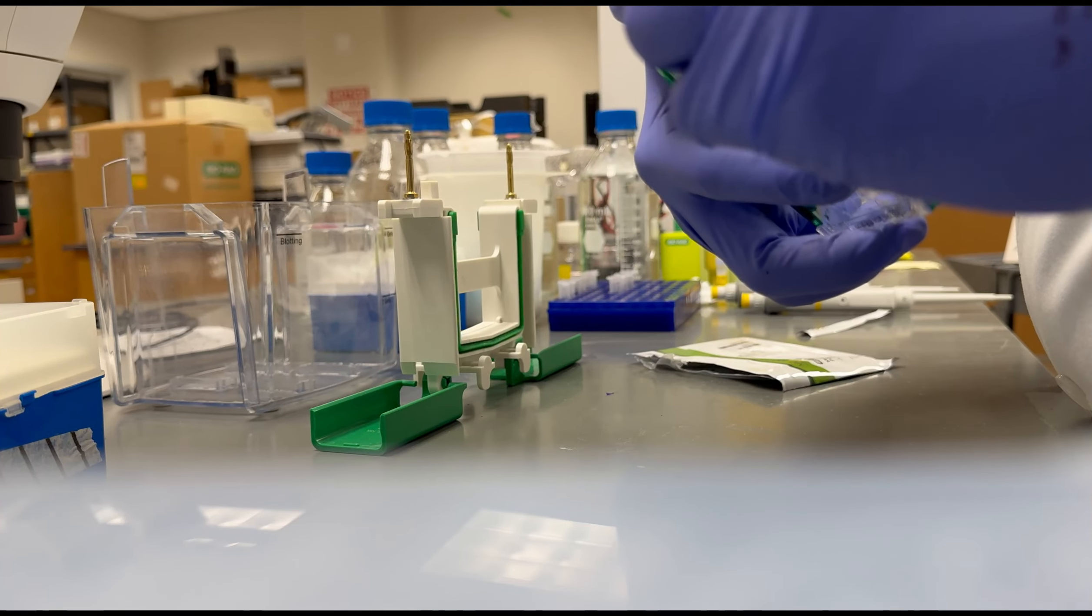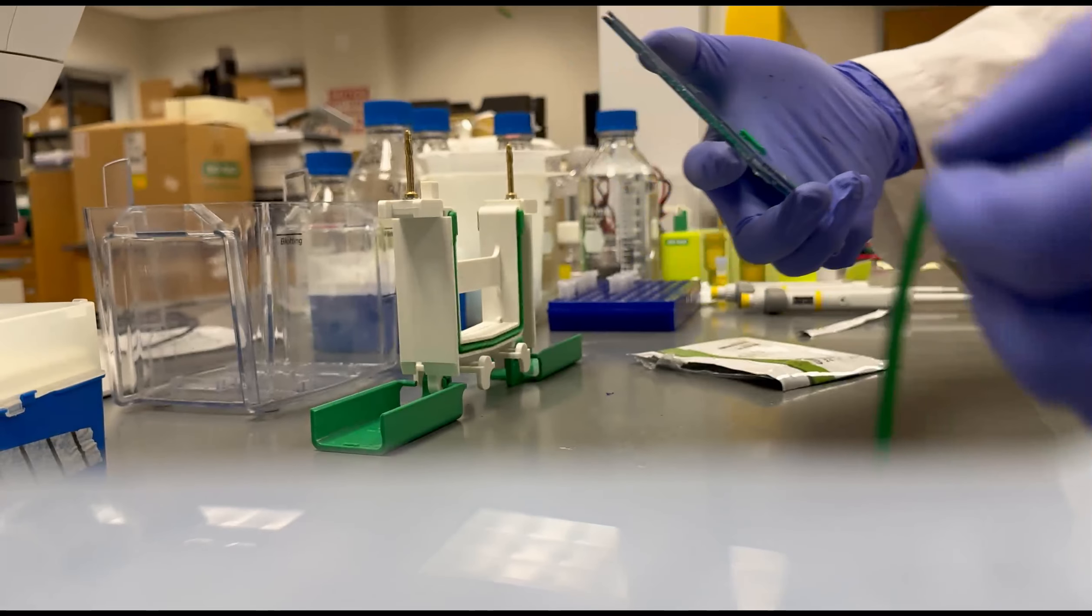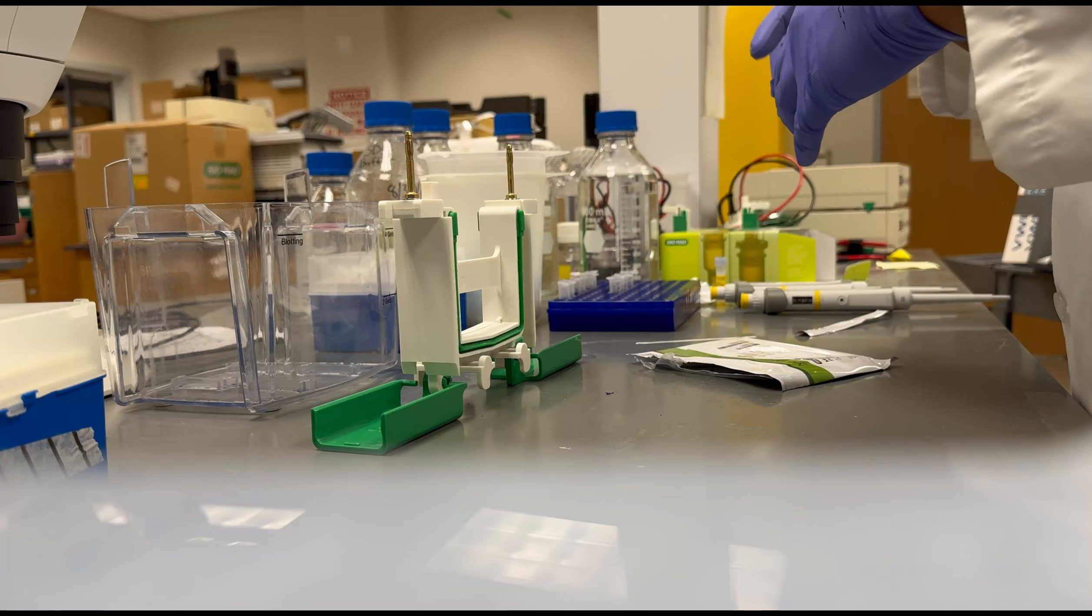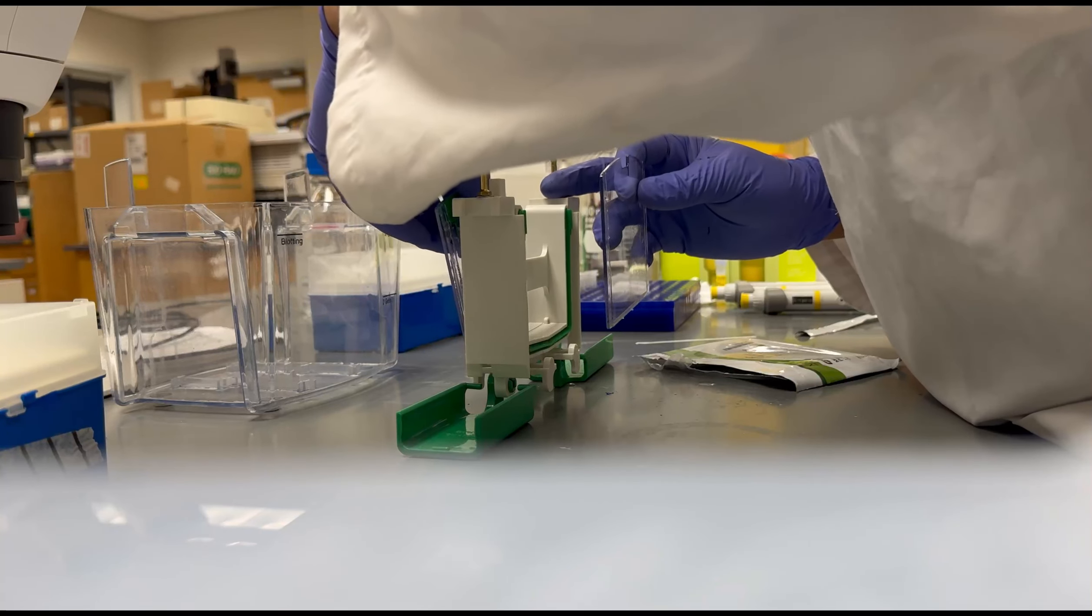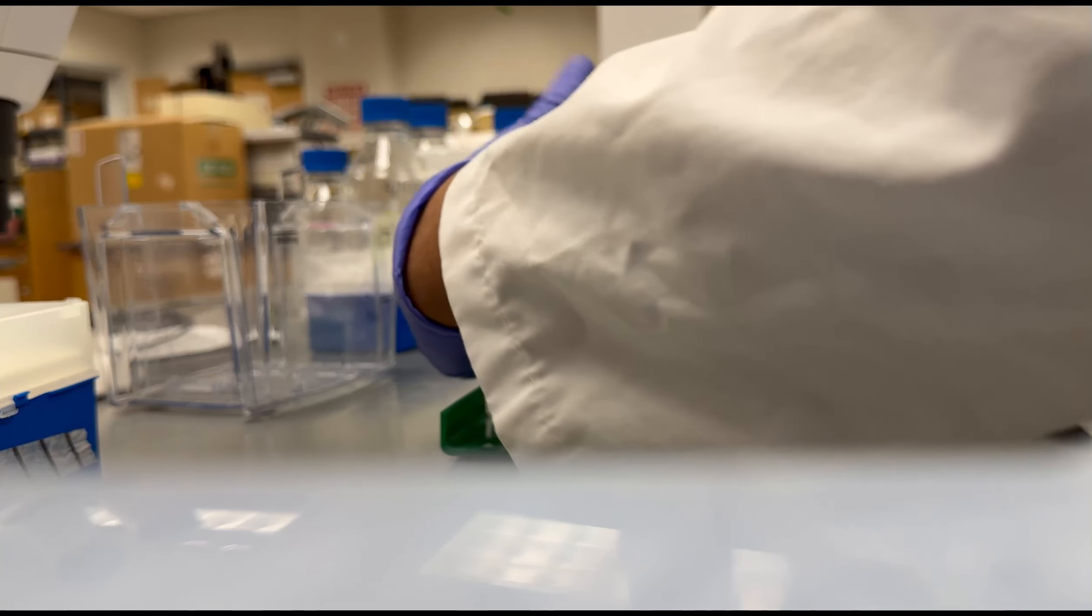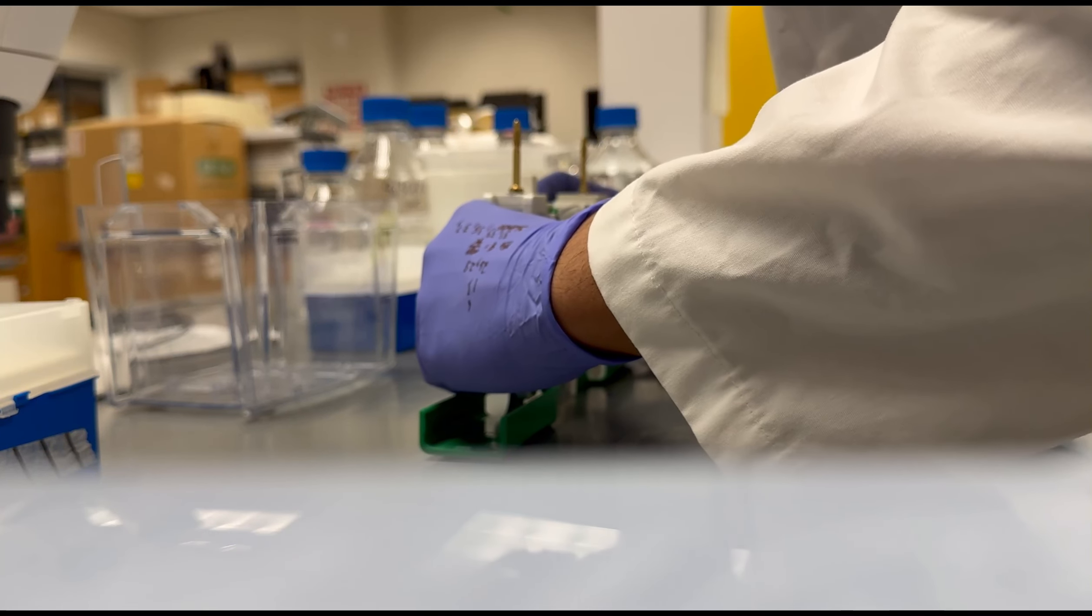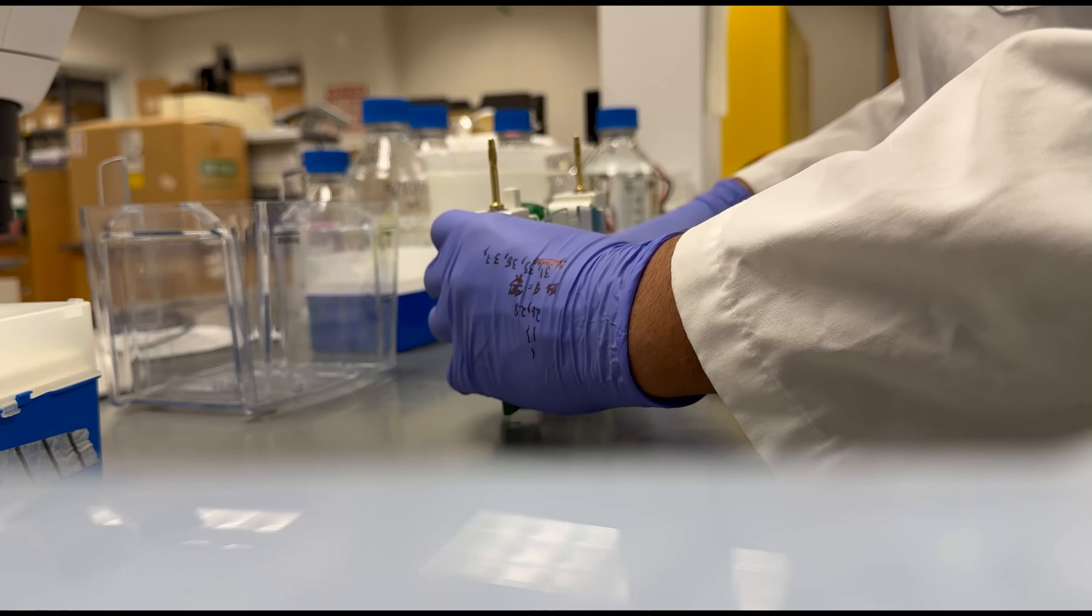The next step is loading a gel onto the electrode chamber. First, one must remove the green tape at the bottom of the gel to allow the contents to flow through. The gel plate and the buffer stop plate are then placed into the chamber. Once in the chamber, the green clamps are then closed on either side to secure the gel.